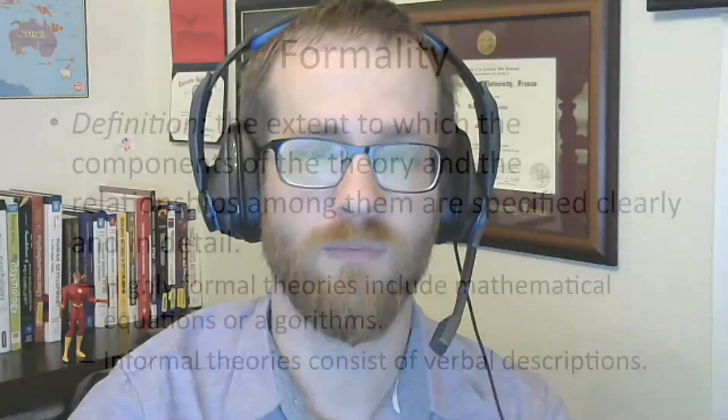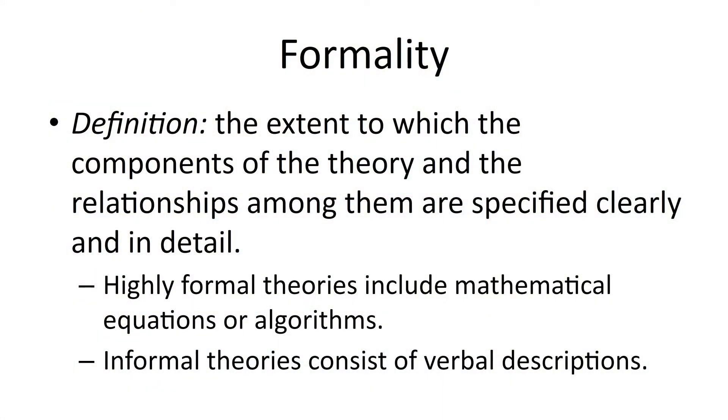The first dimension, formality, refers to the extent to which the components of the theory and the relationships among them are specified clearly and in detail. A highly formal theory includes things like mathematical equations and algorithms to very precisely explain what you should expect based upon the input variables, whereas a more informal theory is just a verbal description of how things tend to work.